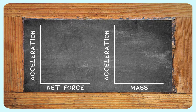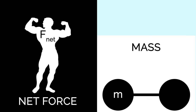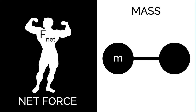The acceleration of an object is directly proportional to the net force and inversely proportional to its mass. The second law is dependent on two variables: the net force in action and the object's mass.